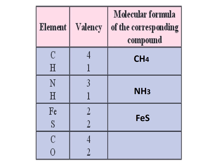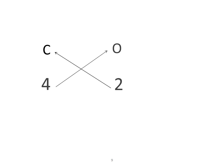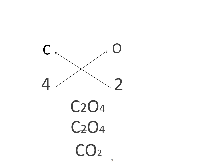Next example: we need to find out the molecular formula of the compound that has carbon and oxygen, which have valencies of 4 and 2. We start by writing the symbols: carbon is C, oxygen is O, with valencies 4 and 2. Then we cross multiply and get C2O4. But we know that these numbers can cancel each other, so after cancellation it becomes CO2. So CO2 becomes the molecular formula of the compound made up of carbon and oxygen.